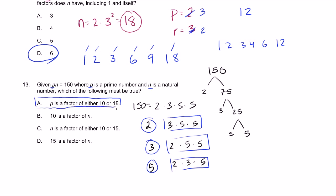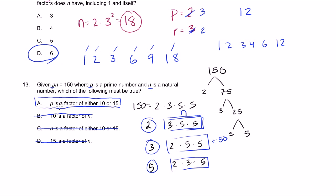Let's look at the other choices to make sure. Choice: 10 is a factor of n. Well, 3 times 5 times 5 is 75, and 10 is not a factor of 75, so that's not correct. Choice: n is a factor of either 10 or 15. These potential n values are larger than 10 or 15, so that's not the answer. Choice: 15 is a factor of n. If p equals 5, then n is 2 times 5 times 5, which is 50, and 15 is not a factor of 50. So our first inclination was correct: p is a factor of either 10 or 15.